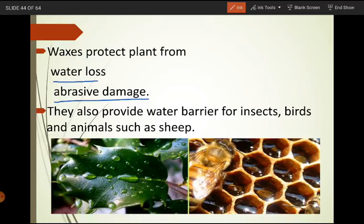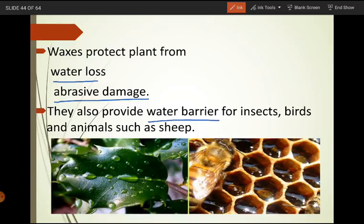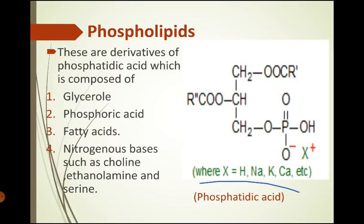In animals, insects, birds, and higher animals such as sheep, waxes are also present in the form of a layer on their body. They act as a water barrier, preventing the loss of water from the body. These waxes help maintain homeostasis — the water and salt balance inside the body. Next, our third group of lipids is phospholipids.